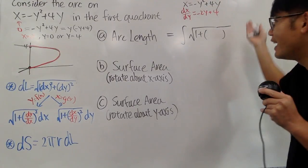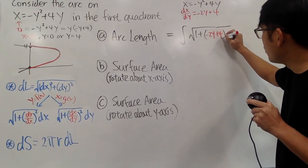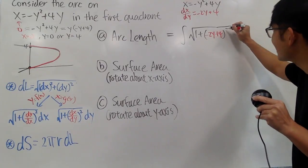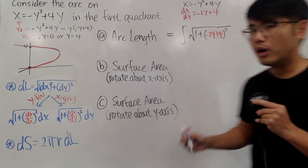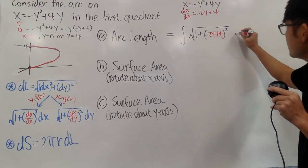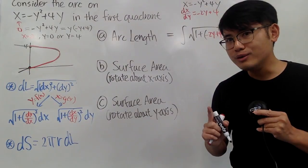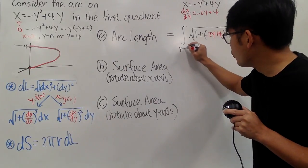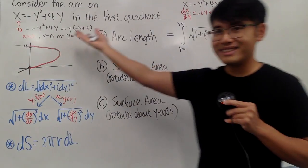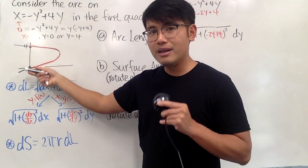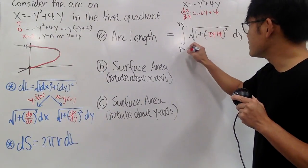And you put this right here inside. Negative 2y plus 4, and don't forget the little square, right here. And in this case, we are in the y world. So, put down the dy here, and because we are in the y world, we have to look for the y values going from where to where. And we did it. Starting from here up to here, from 0 to 4. So, that's nice, and we are done.